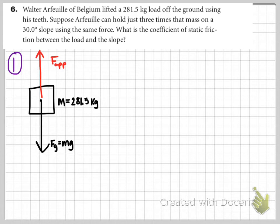So that's the first part of the problem. It's useful, because you're gonna need it later, to think about drawing what that would look like. We've got an applied force that he's putting on this object, the mass of which is 281.5 kilograms, and of course there's a force of gravity down on it.